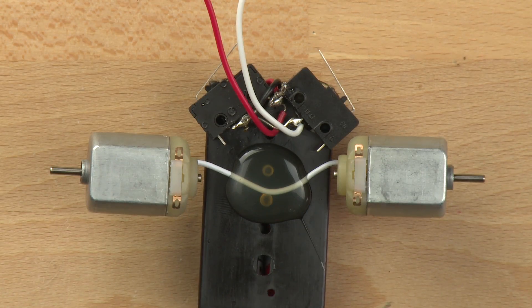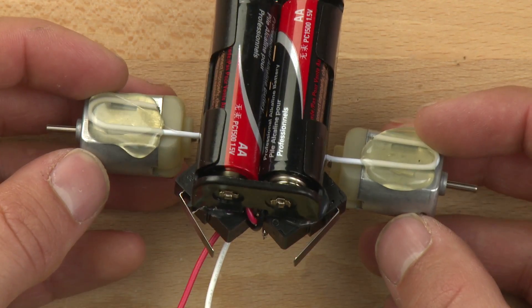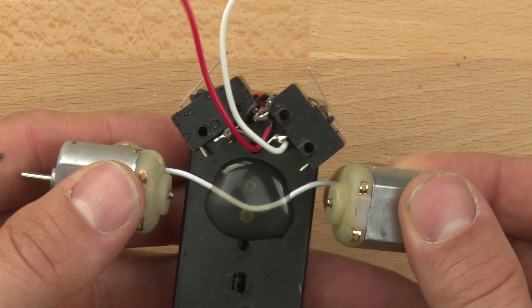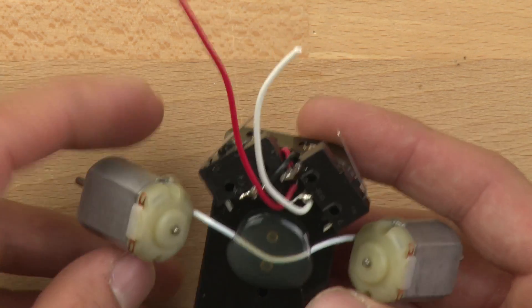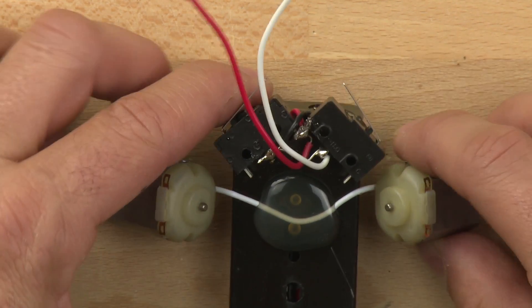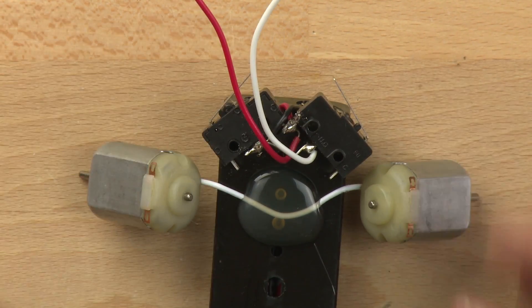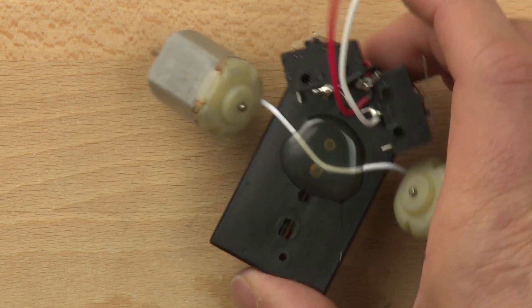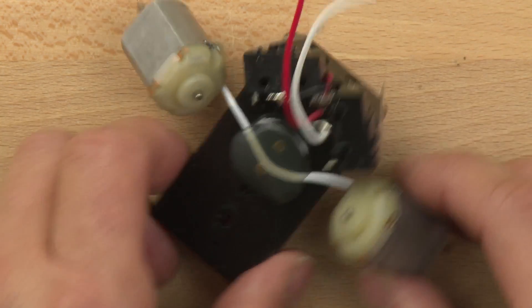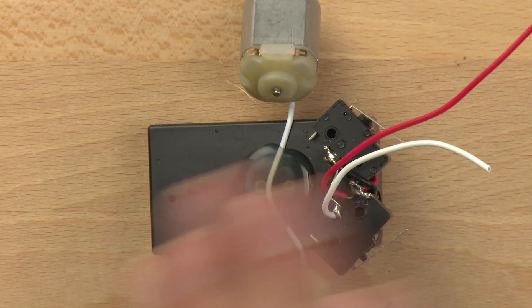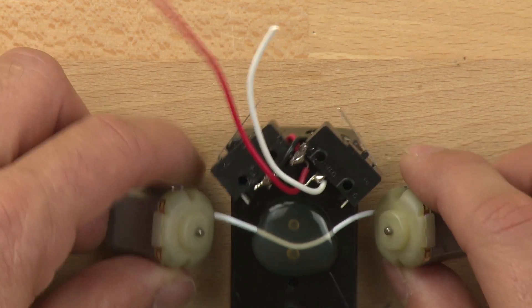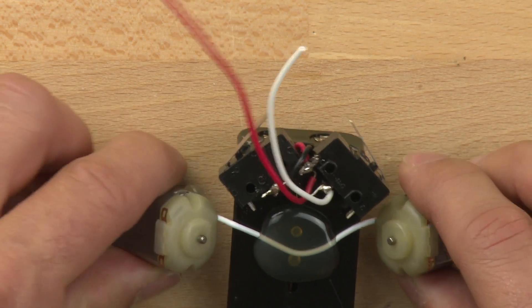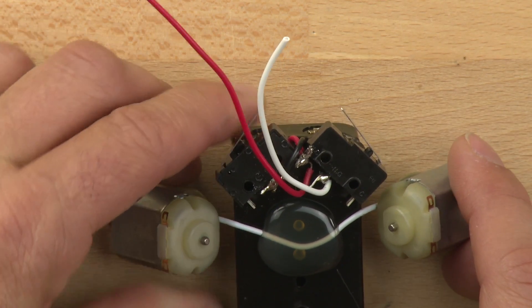Once the glue is dry on the motors, you can bend them down so that they become the feet of the little bot. They should bend down far enough so that the bot is at a bit of a slope this way, so this end is a little higher than this end. They should be about equal across from each other.